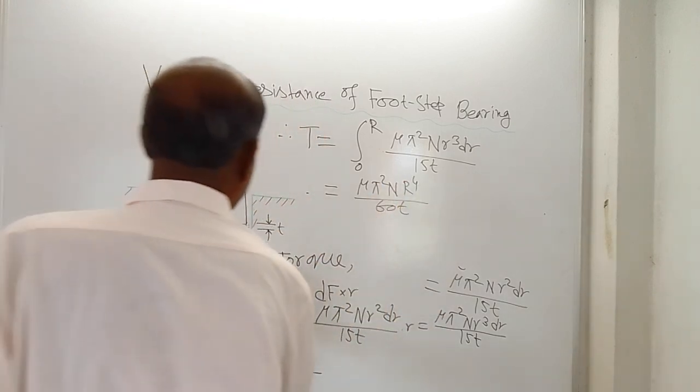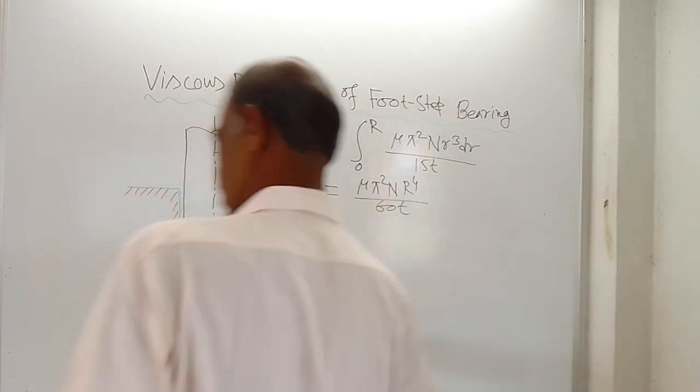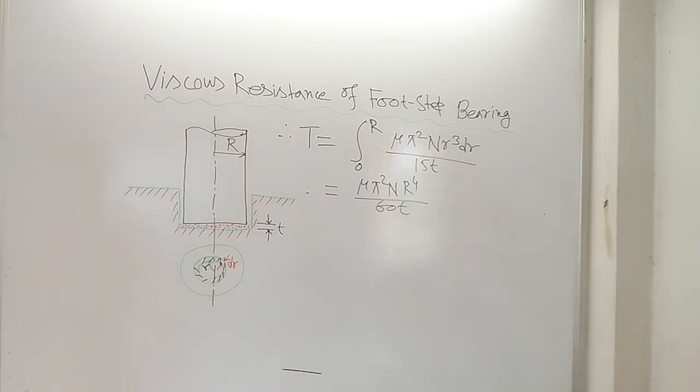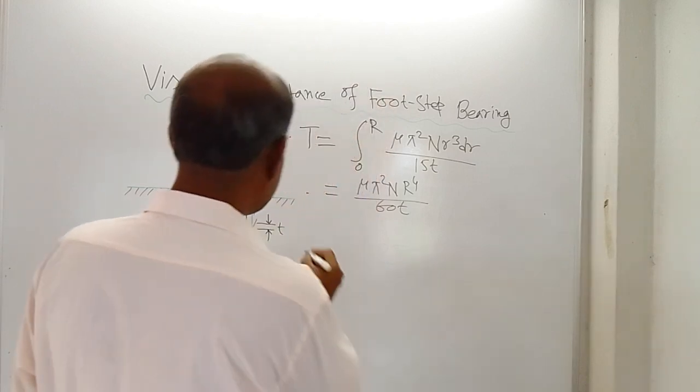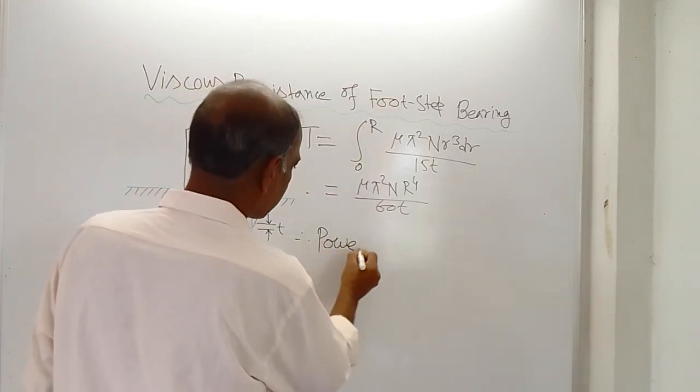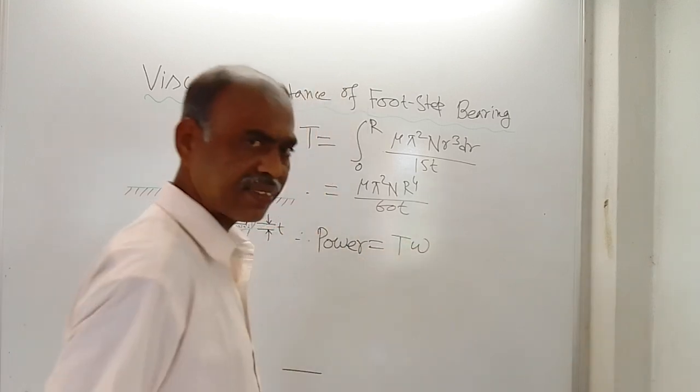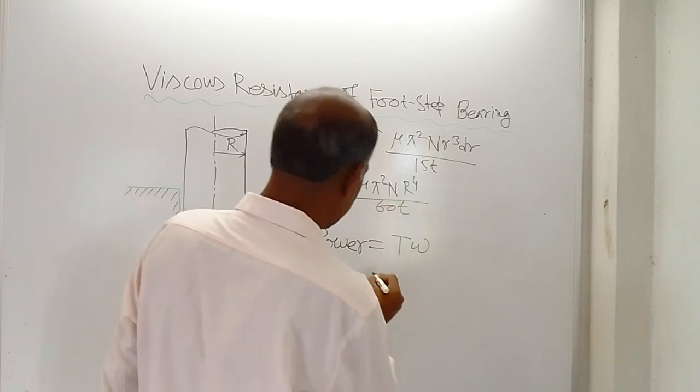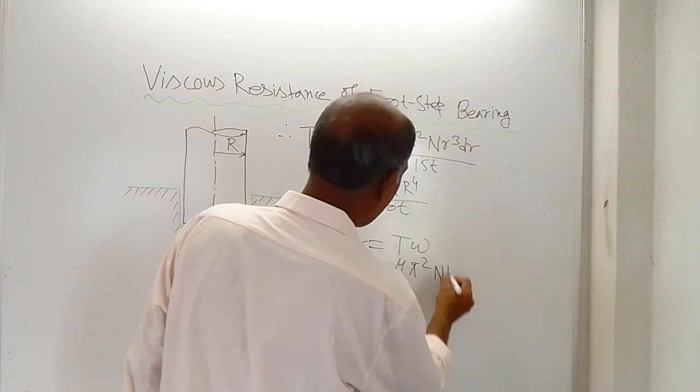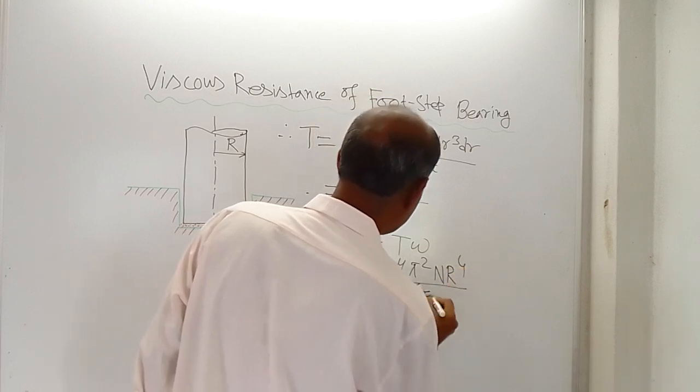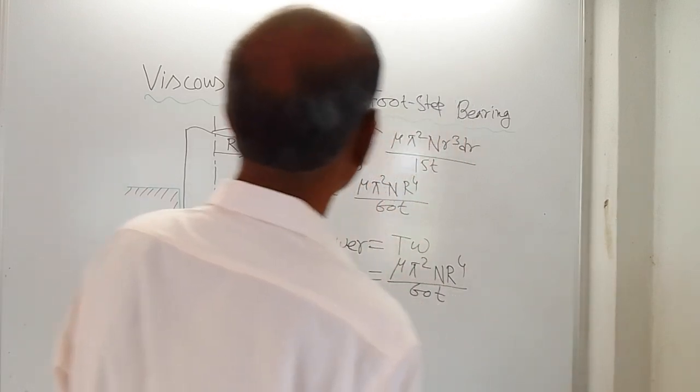Therefore, what is the power? Power absorbed in overcoming the viscous resistance offered by the oil of thickness t is power. That is equal to what? This T multiplied by ω. Omega is the angular speed. T is this much. So μ π² n r to the power 4 by 60t, and omega is equal to what?